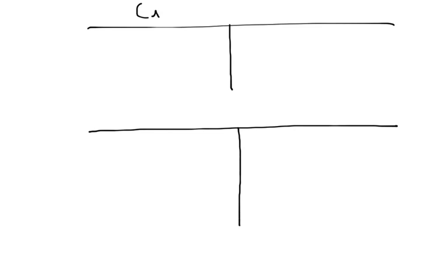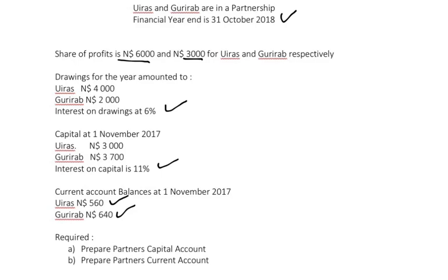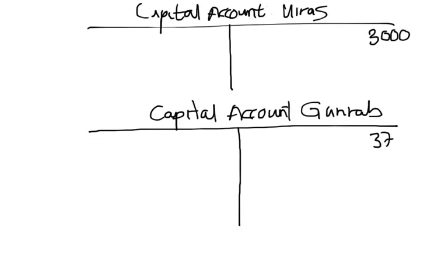We'll prepare the capital account — this is your standard T-account or ledger. Capital increases on the credit side; you can watch the first video for reference. Anything that decreases capital, like drawings, is recorded on the debit side. The opening balance for Uiras's capital is $3,000, and for Gurirap it is $3,700. These are your balances brought down on the 1st of November 2017.